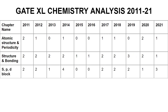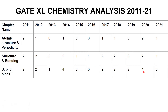The next unit is SP and D Block Elements — mostly periodic table related questions. These have also been asked for quite some marks, leaving 2015 and 2016. In 2014, we had four mark worth questions, that is two questions of two marks each. In 2011 and 2012, two marks each. In 2013 and 2020, we have one mark questions. In last year's paper, you had a three mark question — that is one two mark question and one one mark question.